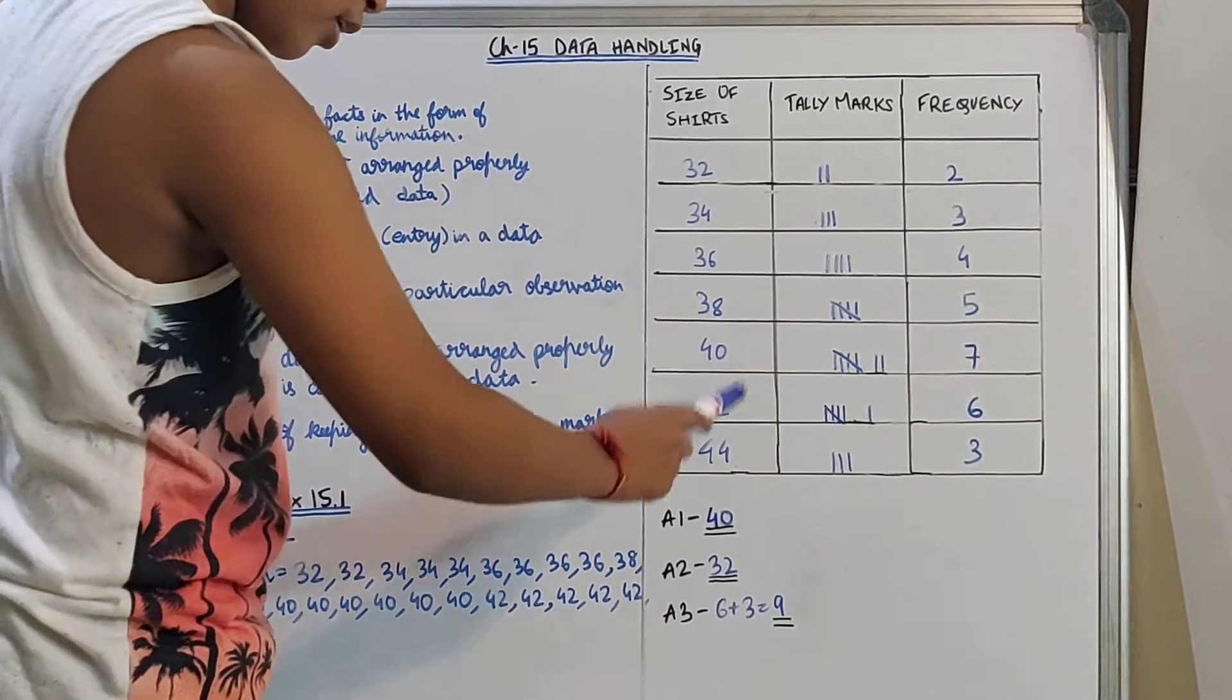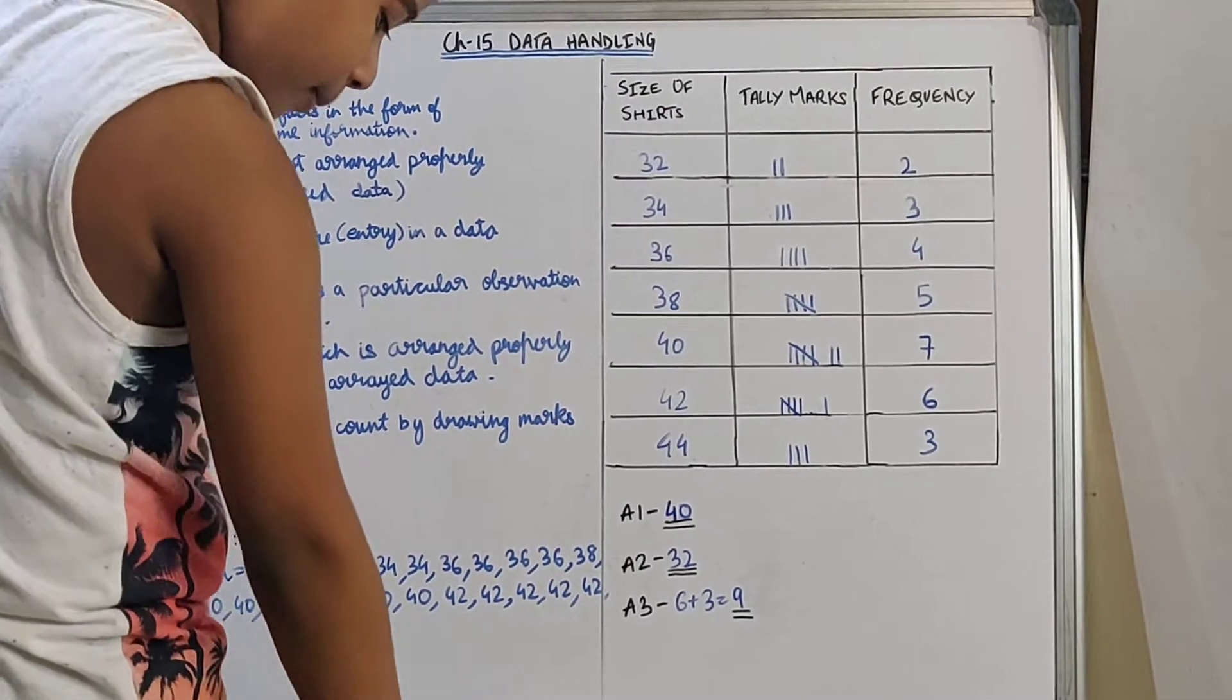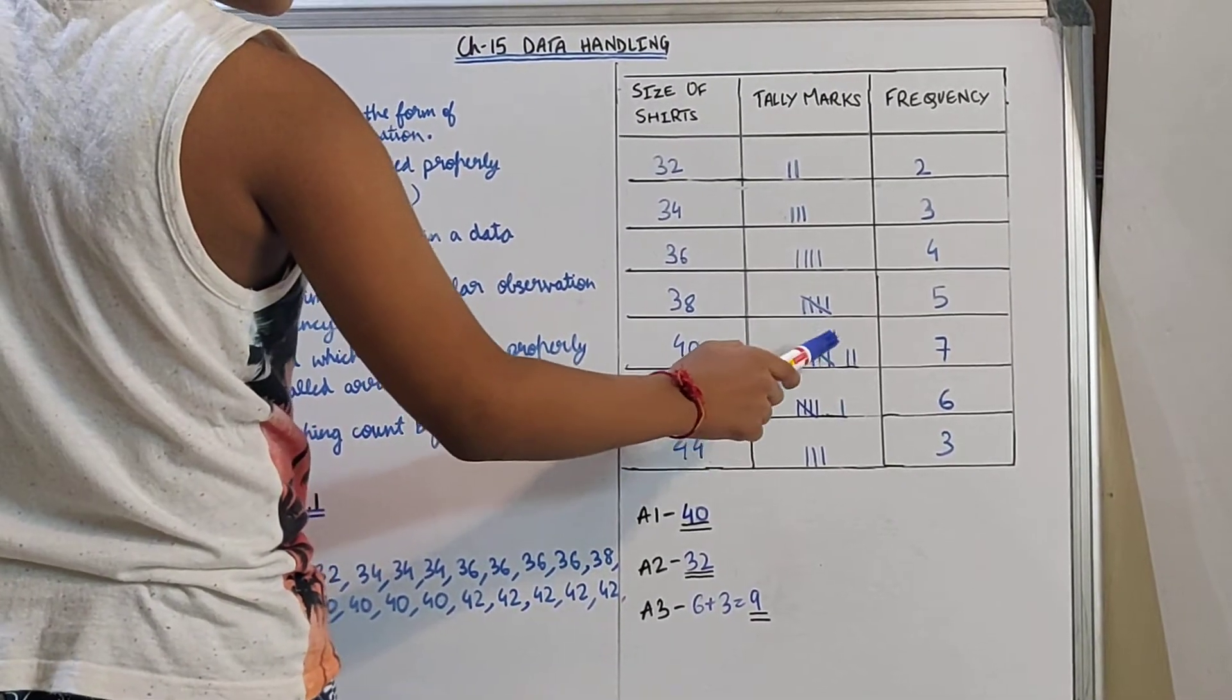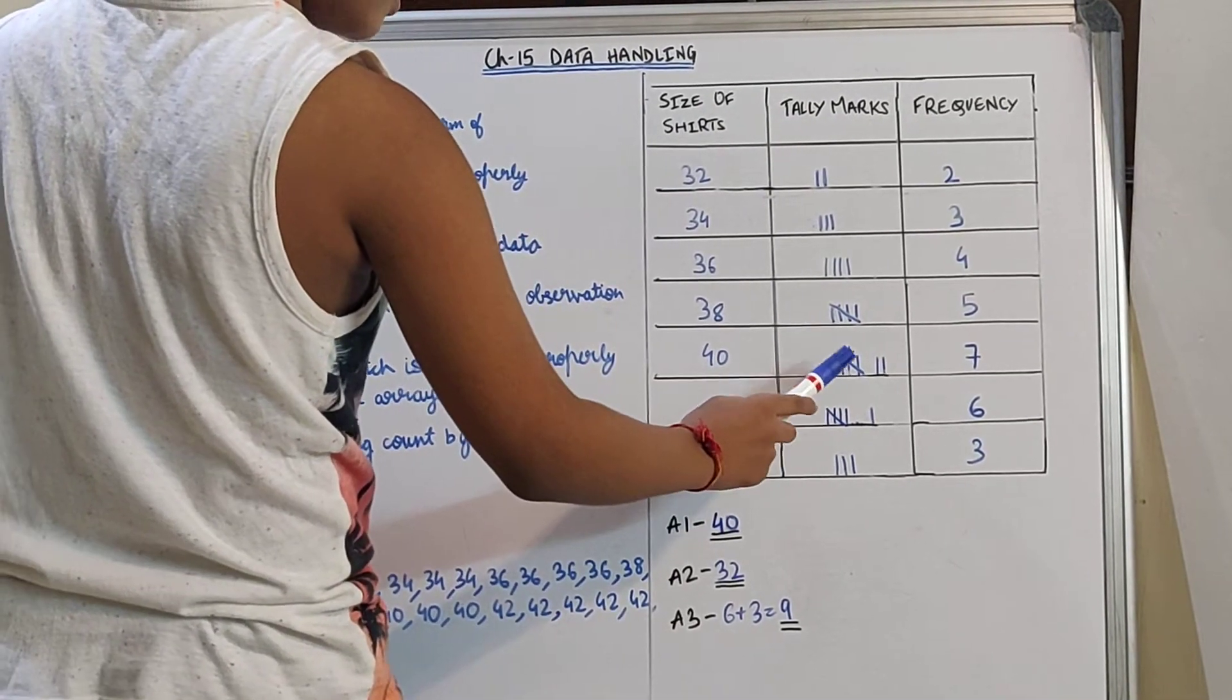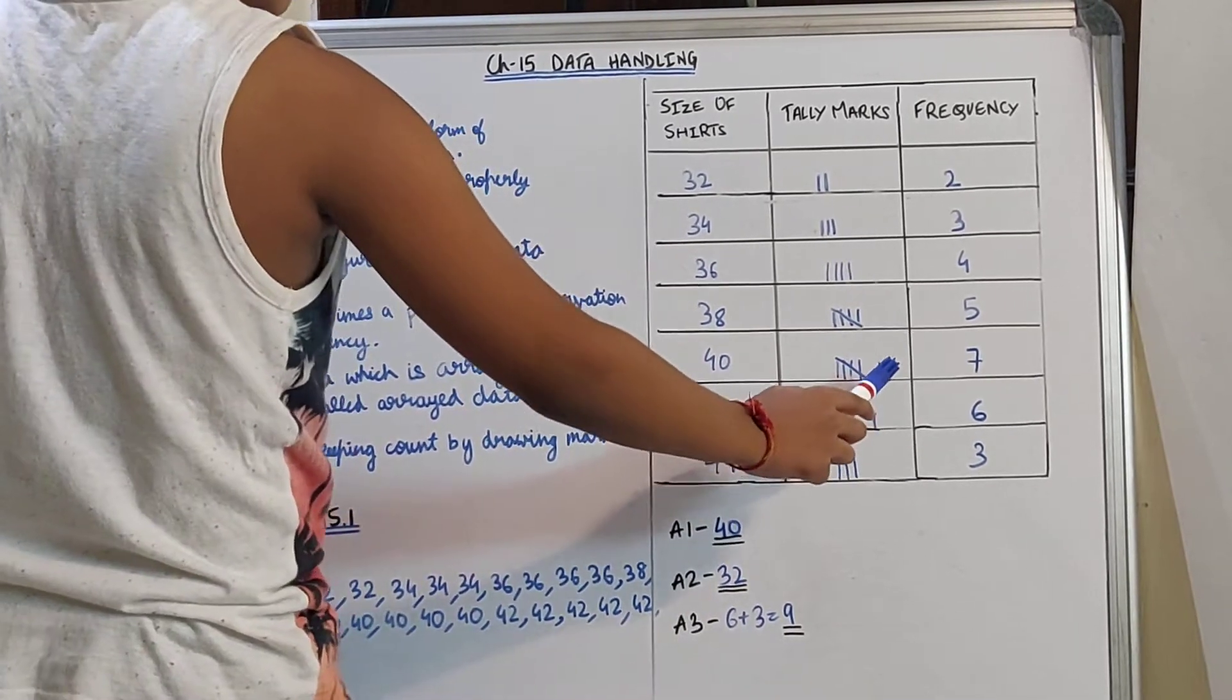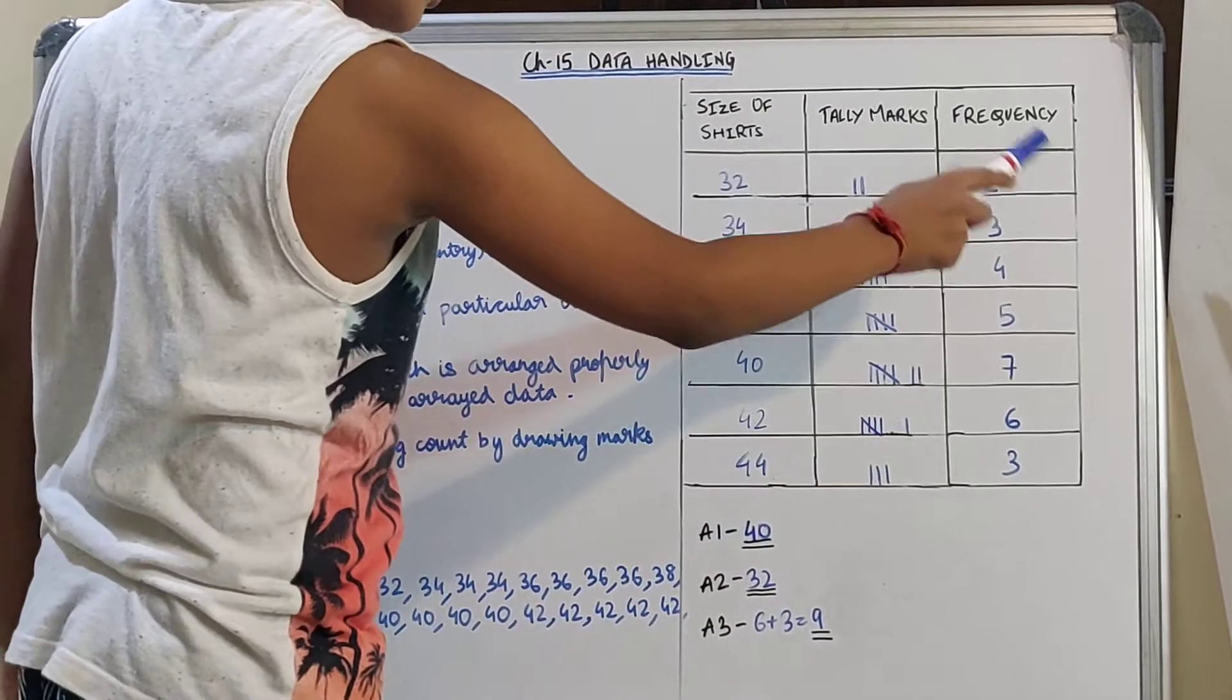Then 40. Here it is given 7 times. 40 is repeated 7 times. So first we have to make 4 tally marks, then the 5th one will be drawn diagonally, then 2 more. 5 plus 2 is 7. So 7 in the frequency.